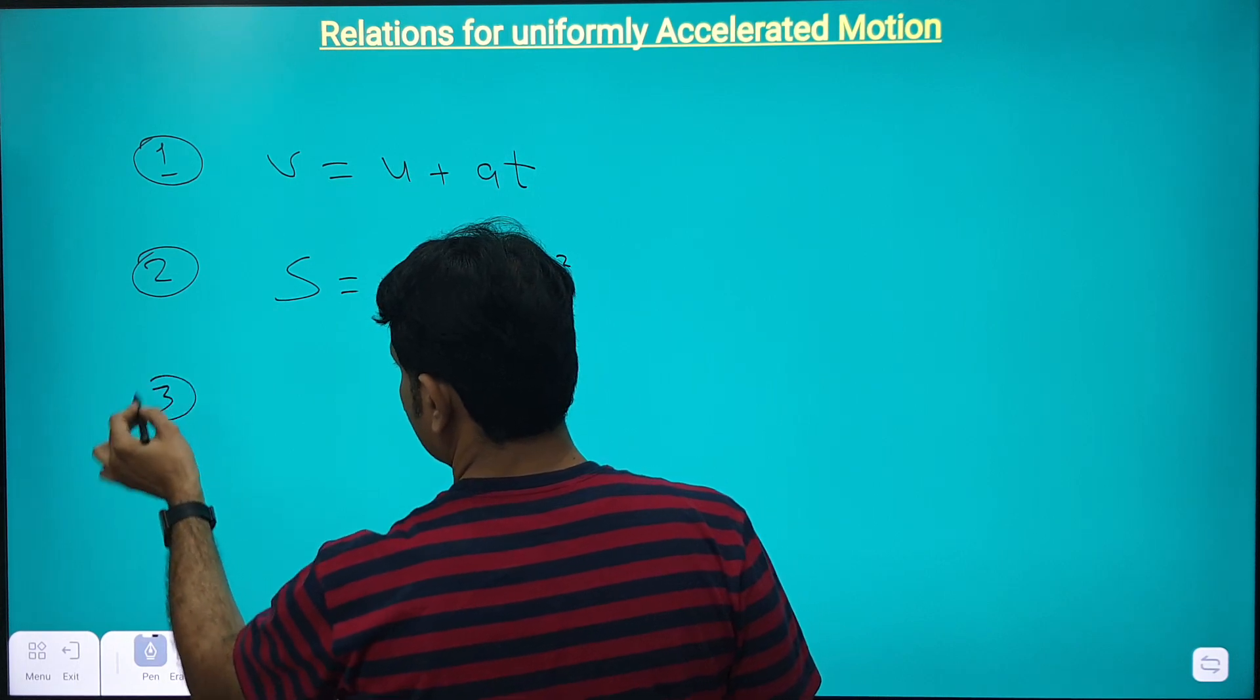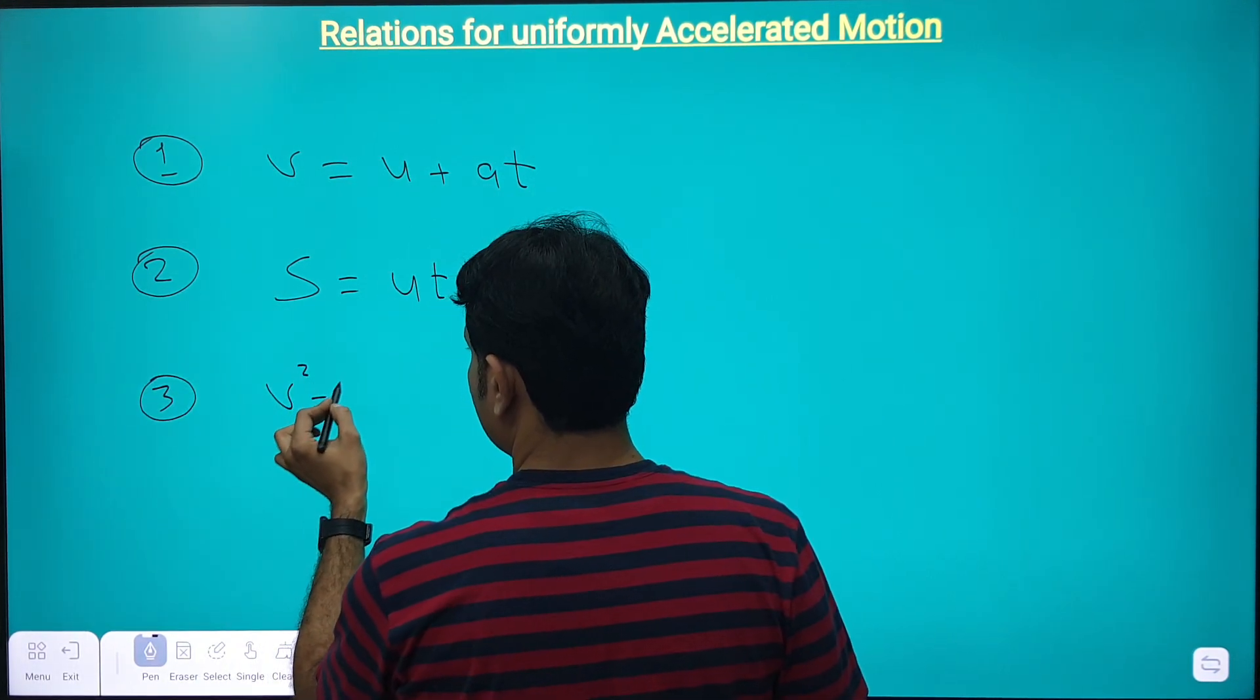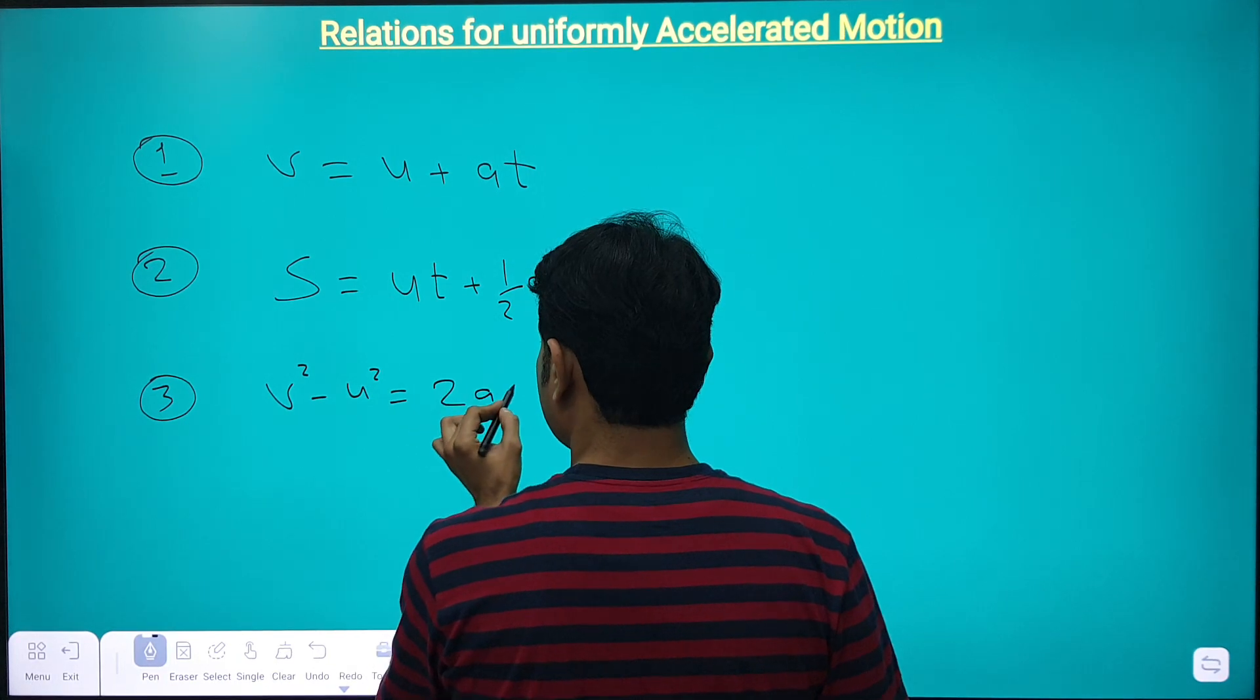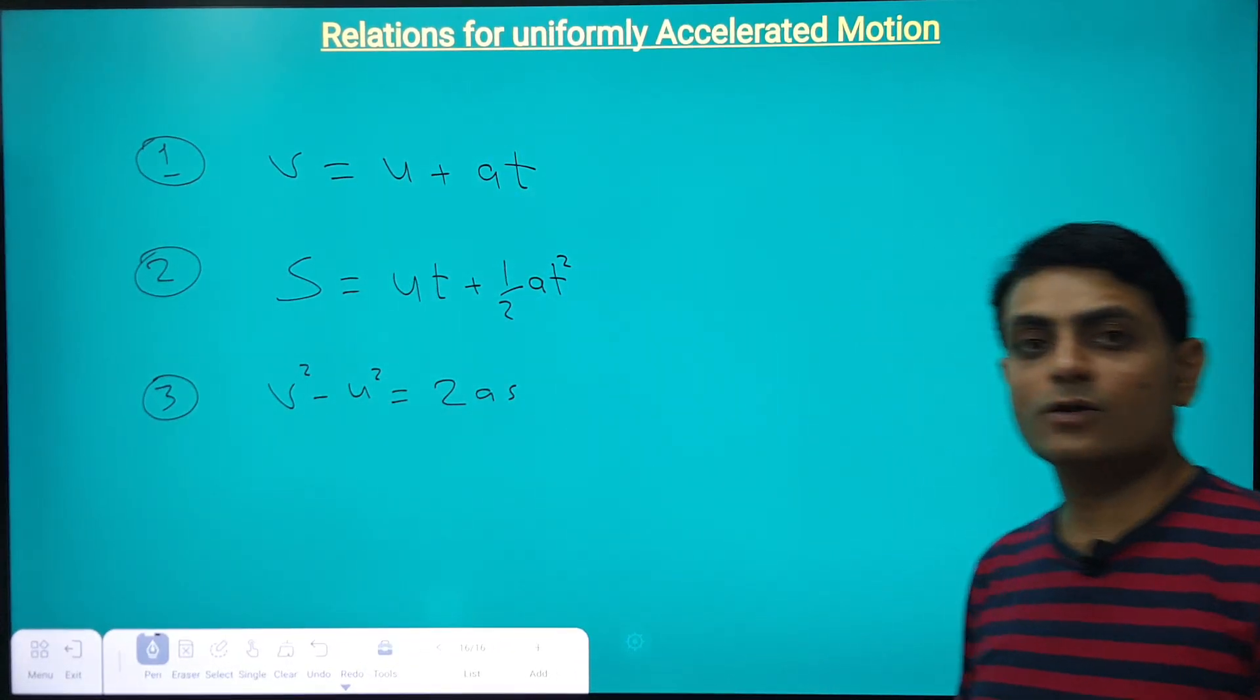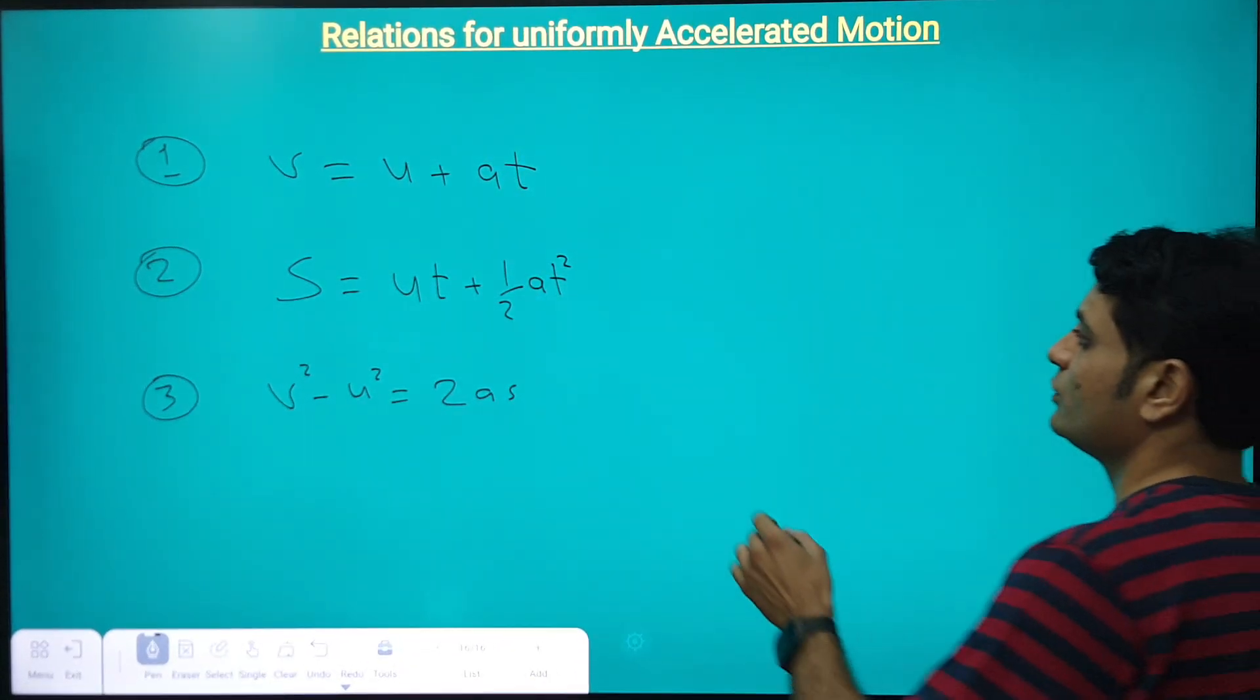The third one is V square minus U square is equal to 2 A S. So, these three are the relations for constant acceleration or we can say uniform acceleration.